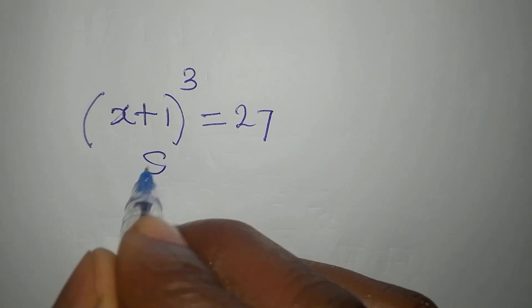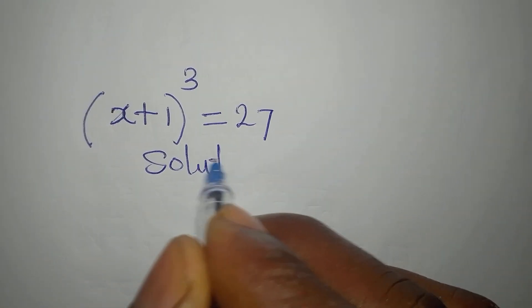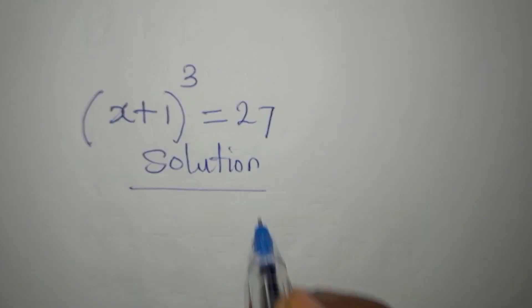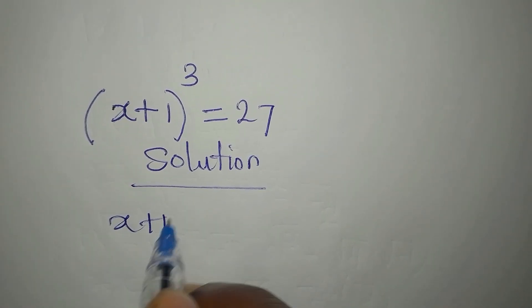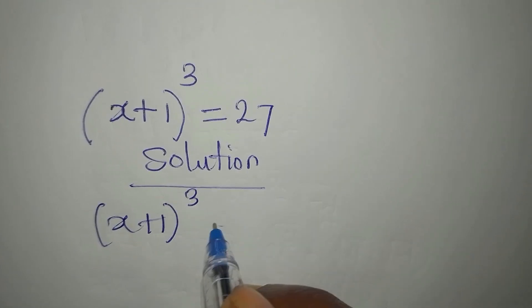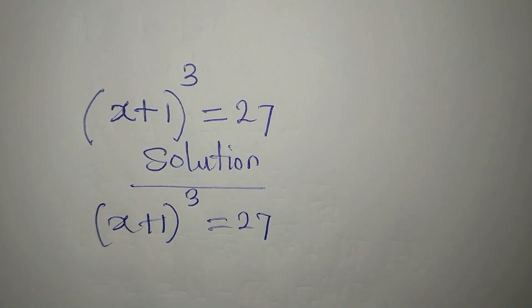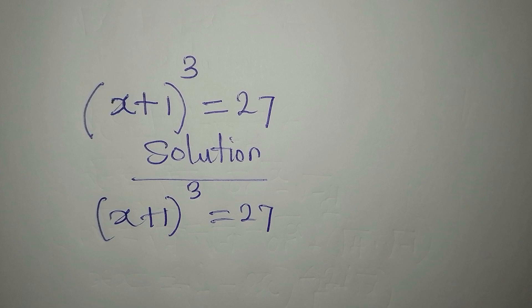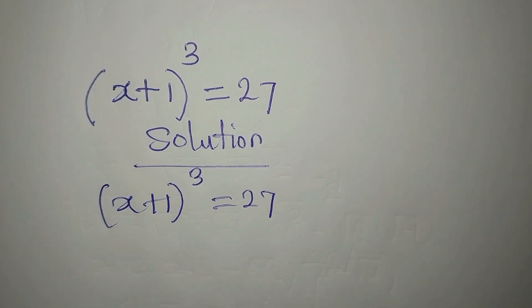Hello everyone. We have this problem to deal with: x plus 1 to the power of 3 equals 27. We are instructed to solve this completely.